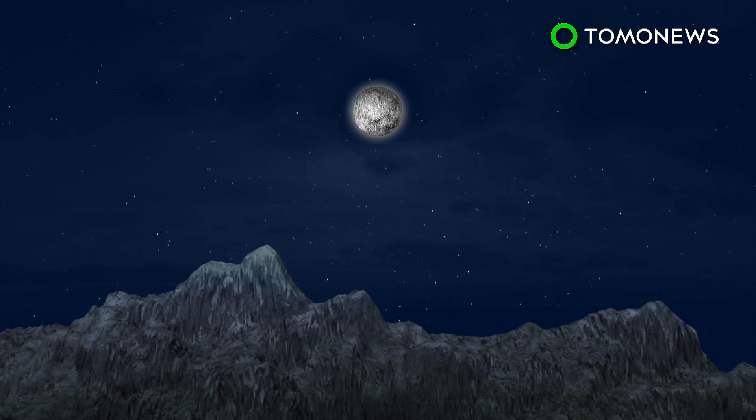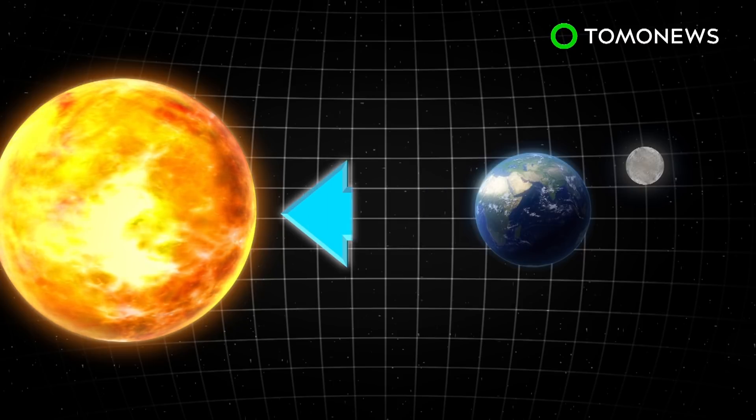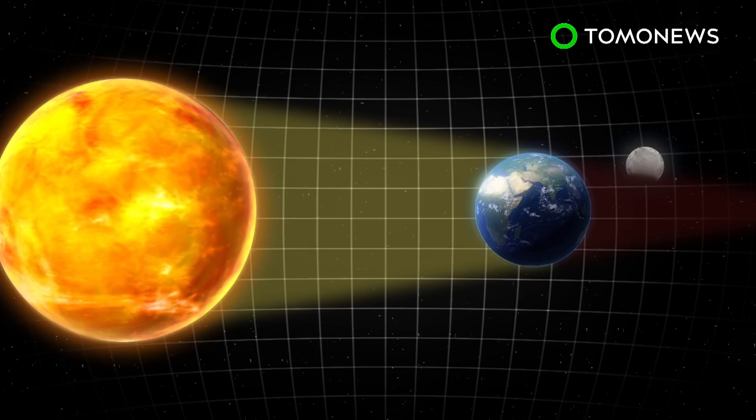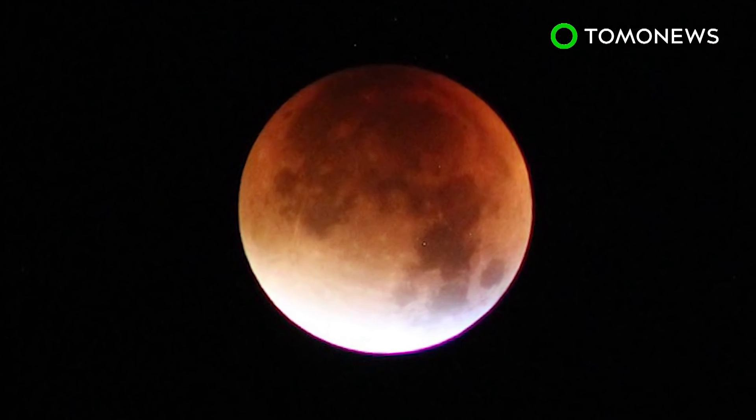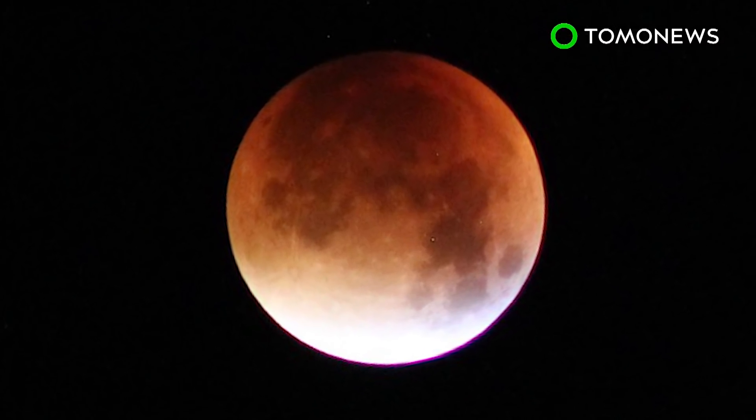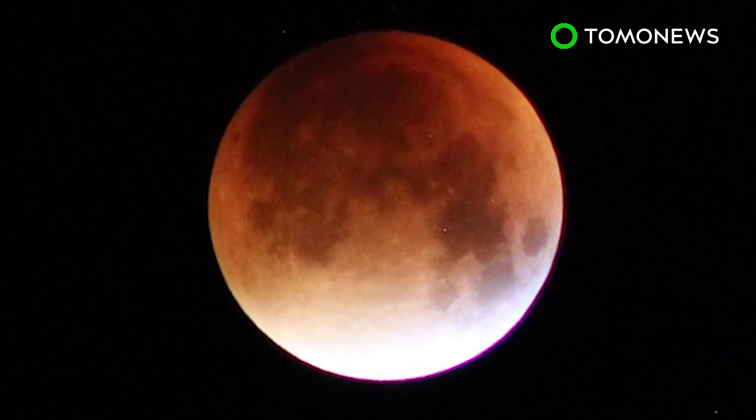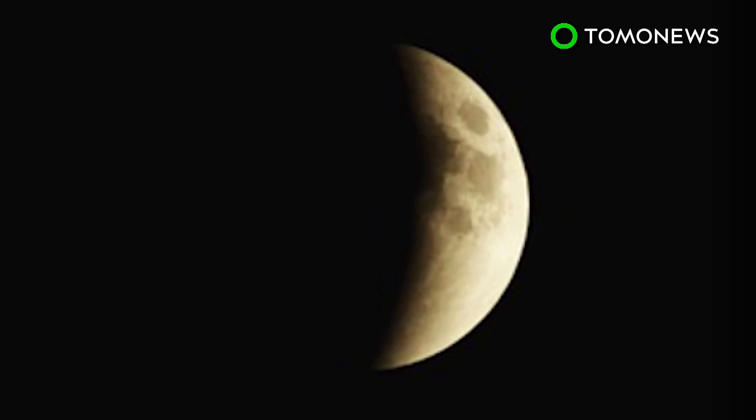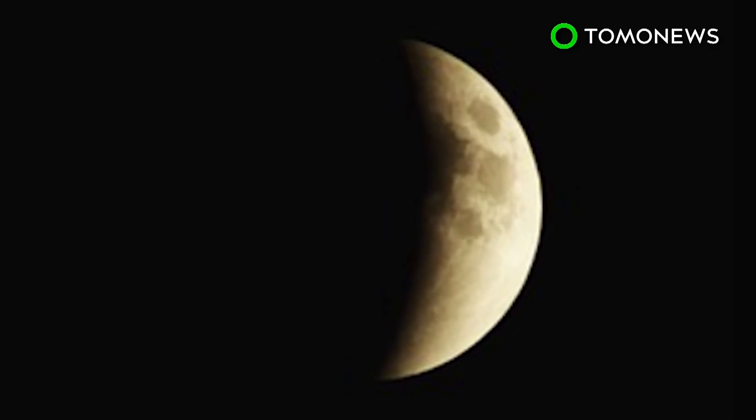The partial lunar eclipse on August 7, 2017 begins at 5:22 PM Greenwich Mean Time and is expected until 7:18 PM. Part of the Moon will orbit through Earth's shadow at a speed of 2,300 miles per hour. It will be visible to most of the world, except all of North America, much of South America, and some areas in East and Northern Russia. Unlike solar eclipses, no special equipment is needed to view lunar eclipses. A clear night sky will suffice.